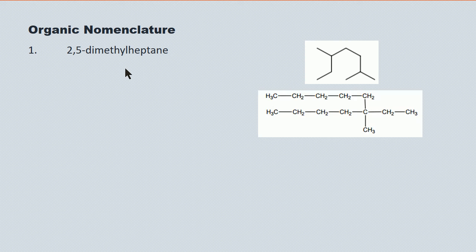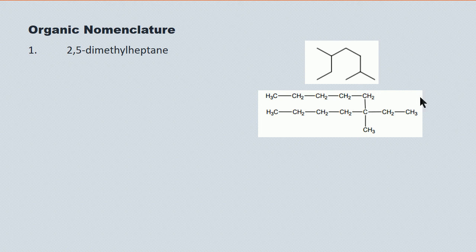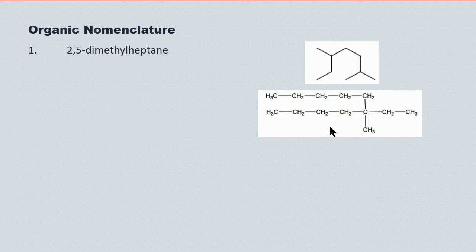Here's a condensed structural diagram for an alkane — let's see if we can find the longest chain. One, two, three, four, five, six, seven, eight, nine, ten — there it is. So whatever else this is, this is a decane represented by these ten carbon atoms. Here's a side chain which is a methyl group, and here's a side chain which is a methyl group — actually an ethyl — and they're attached to the fifth carbon. Alphabetically then, this will be 5-ethyl-5-methyldecane.